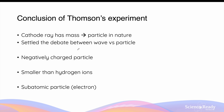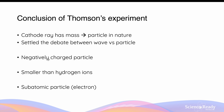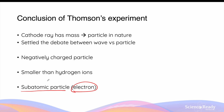Numerous conclusions can be drawn from the results of Thomson's experiment. Most importantly, Thomson showed that cathode rays have mass by calculating the charge-to-mass ratio, and as a result proved that cathode rays are indeed particles in nature, as opposed to waves. This settled the debate between the wave and particle nature of cathode rays. Thomson's experiment also confirmed that cathode rays are made of negatively charged particles, and showed that these charged particles are much smaller than hydrogen ions. Lastly, Thomson concluded that these negatively charged electrons are subatomic particles found in all materials, as the charge-to-mass ratio remained the same regardless of the type of cathode material used.